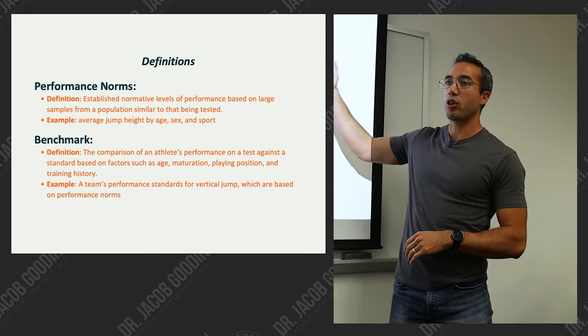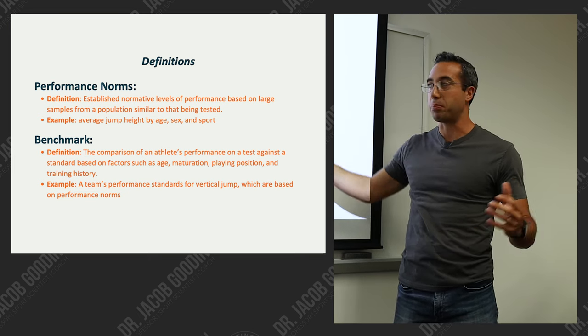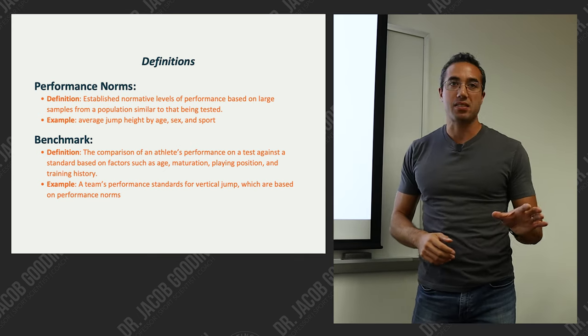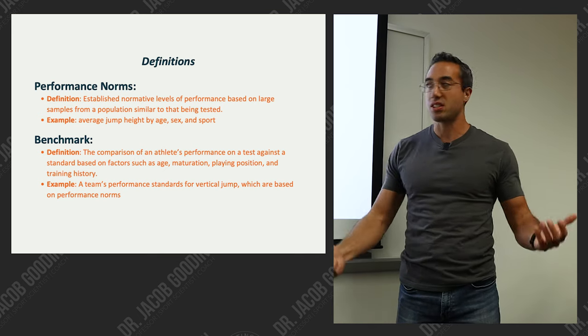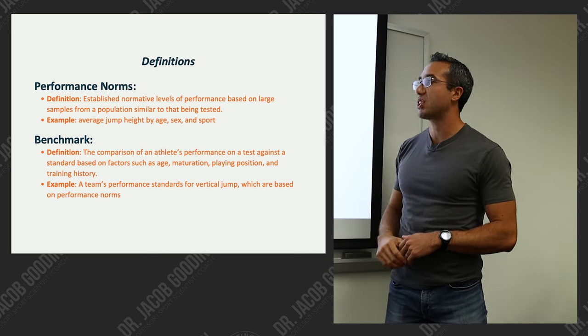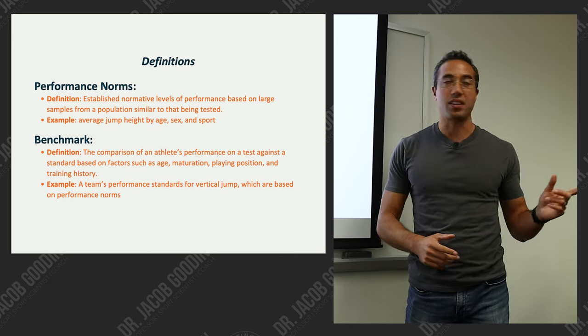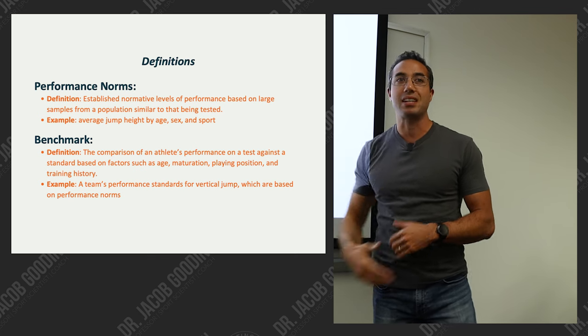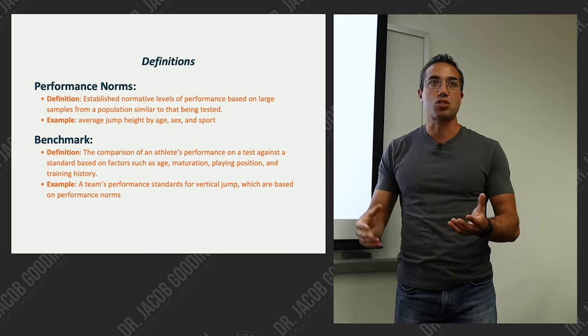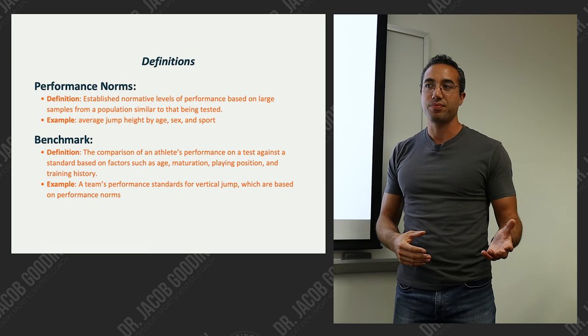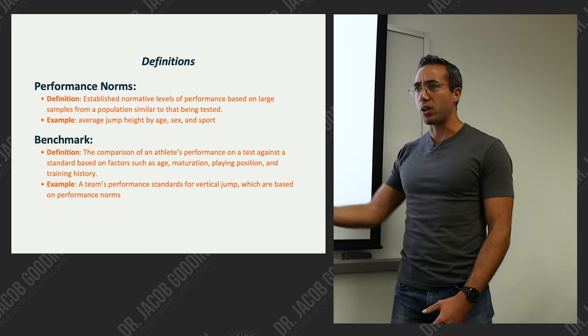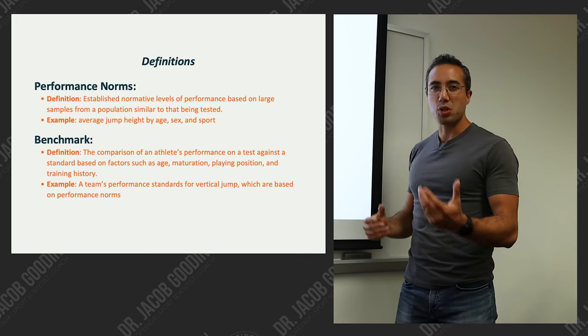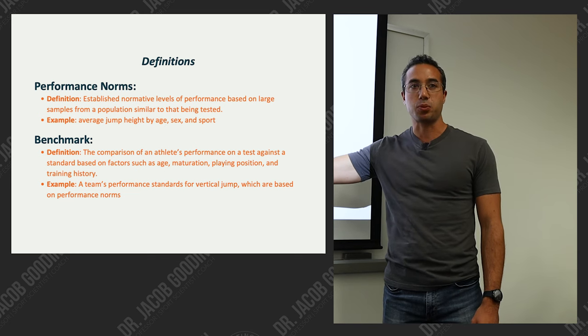Now working from a performance norm, which is more of an average of a sample, a benchmark is a comparison of an athlete's performance on a specific test against a standard based on factors such as age, maturation, playing position, and training history. We get these standards from performance norms, so we can't really create benchmarks until we have an idea of what is normal. We can't just make up benchmarks out of thin air.